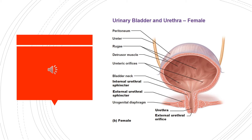The urinary bladder is a muscular sac in the pelvis, just above and behind the pubic bone. When empty, the bladder is about the size and shape of a pear. Urine is made in the kidneys and travels down two tubes called ureters to the bladder. The bladder stores urine, allowing urination to be infrequent and controlled. The bladder is lined by layers of muscle tissue that stretch to hold urine. The normal capacity of the bladder is 400 to 600 milliliters.